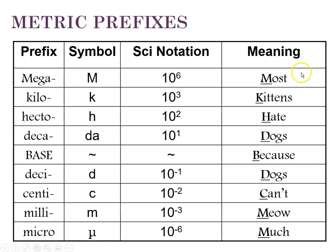So it's important to memorize these. A student of mine came up with this saying to remember from mega down to micro: most kittens hate dogs because dogs can't meow much. Most for mega, kittens for kilo, hate for hecto, dogs for deca, because for base, dogs for deci, can't for centi, meow for milli, and much for micro.